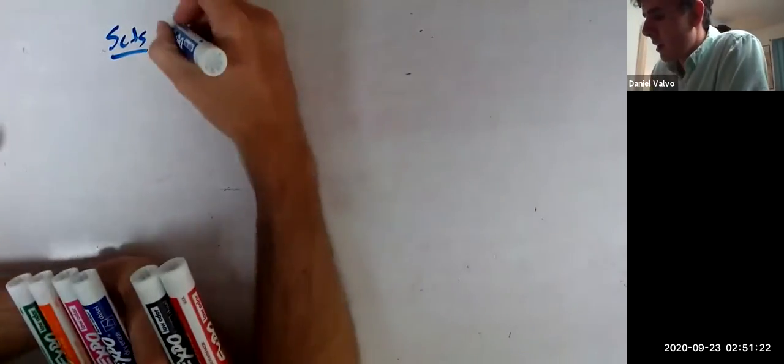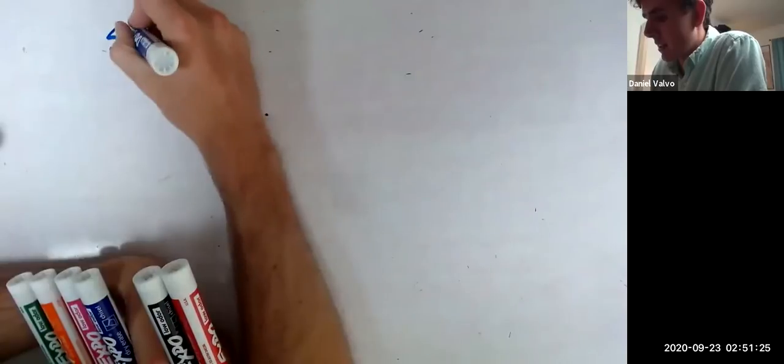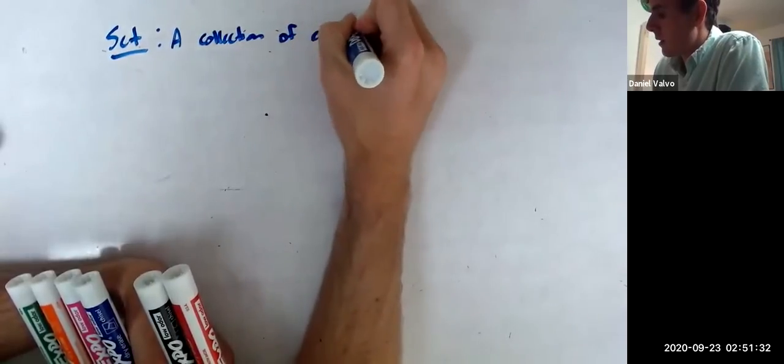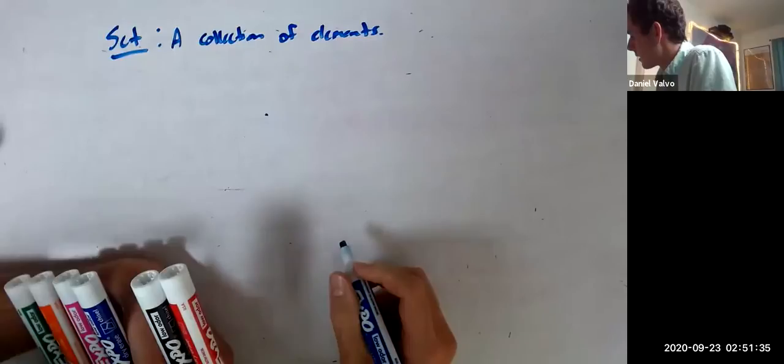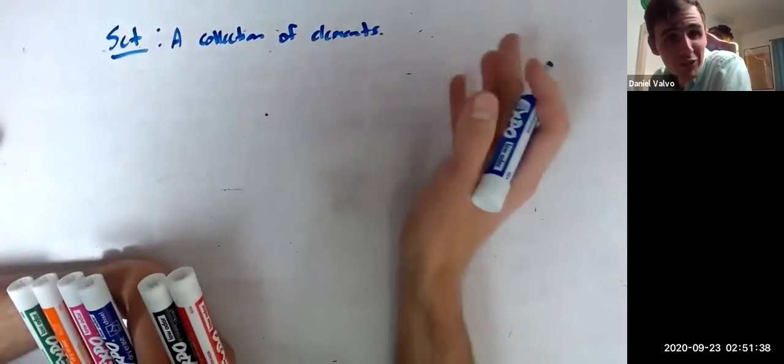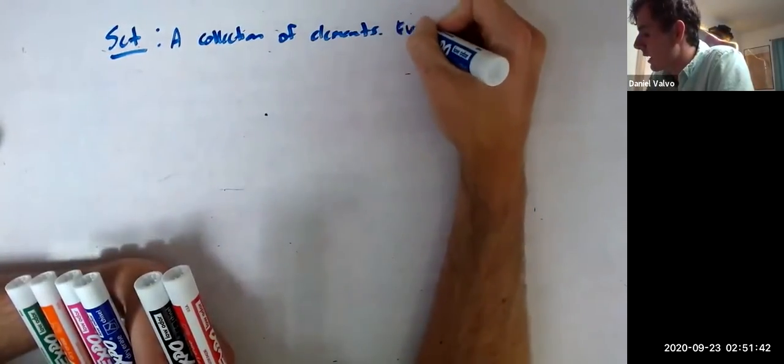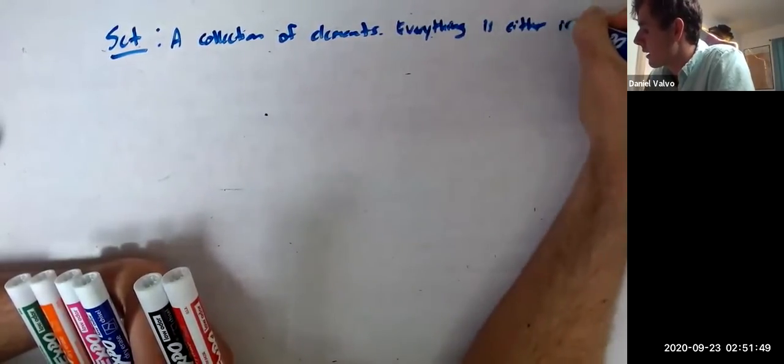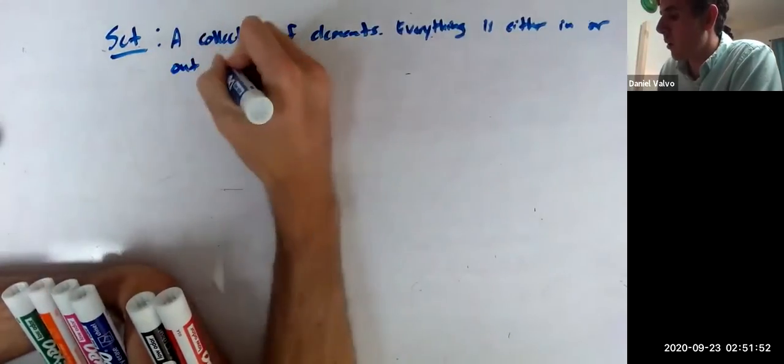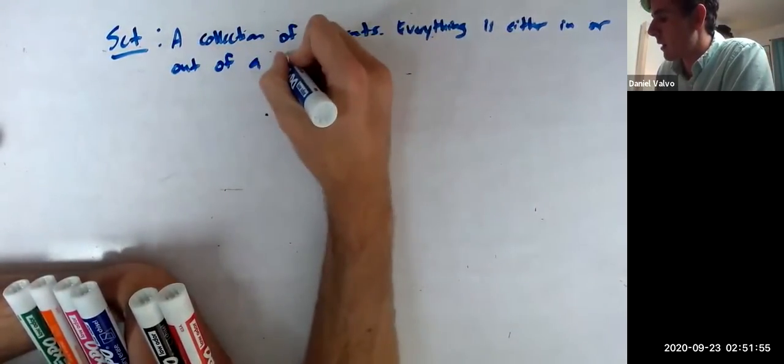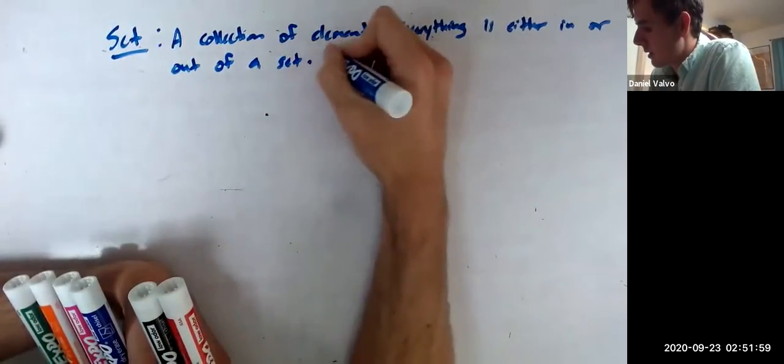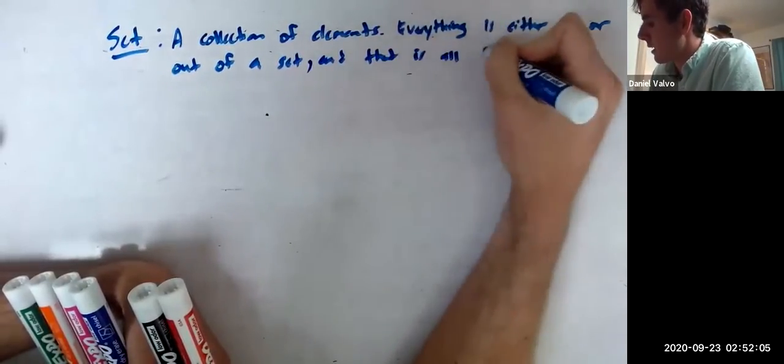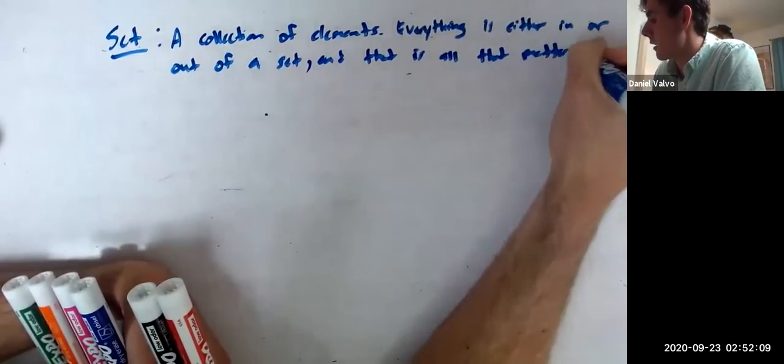So sets are, or a set I should say, is a collection of elements. That's it. Just a collection of things. Specifically though, everything, and I mean everything, is either in or out of a set.